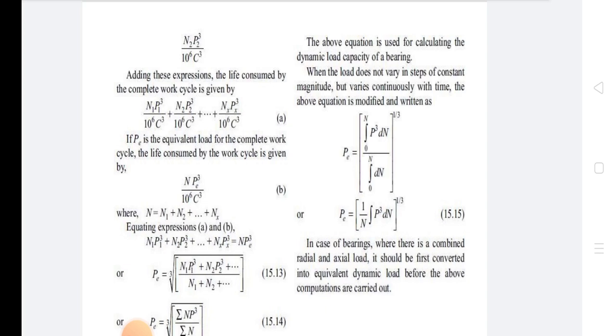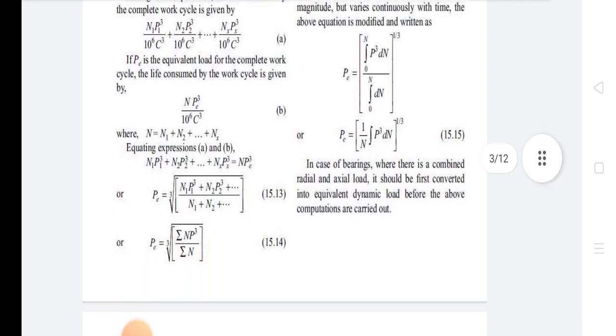Equating expressions A and B, N1 P1 cube plus N2 P2 cube dot dot Nx plus Px cube equals N P equivalent raised to 3, or P equivalent equals cube root of N1 P1 cube plus N2 P2 cube upon N1 plus N2.